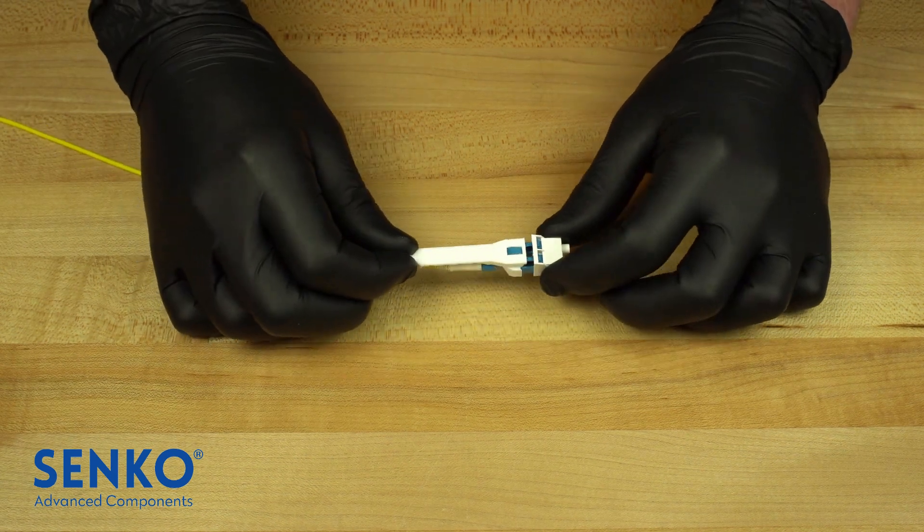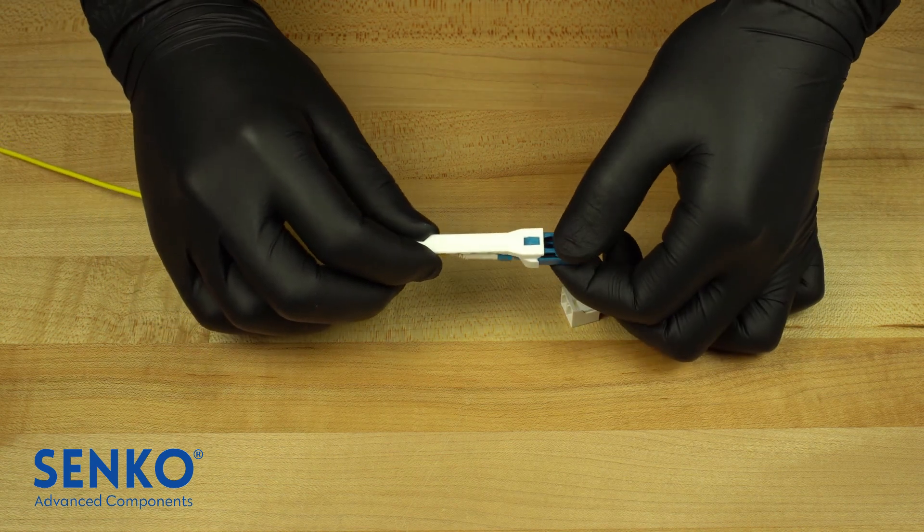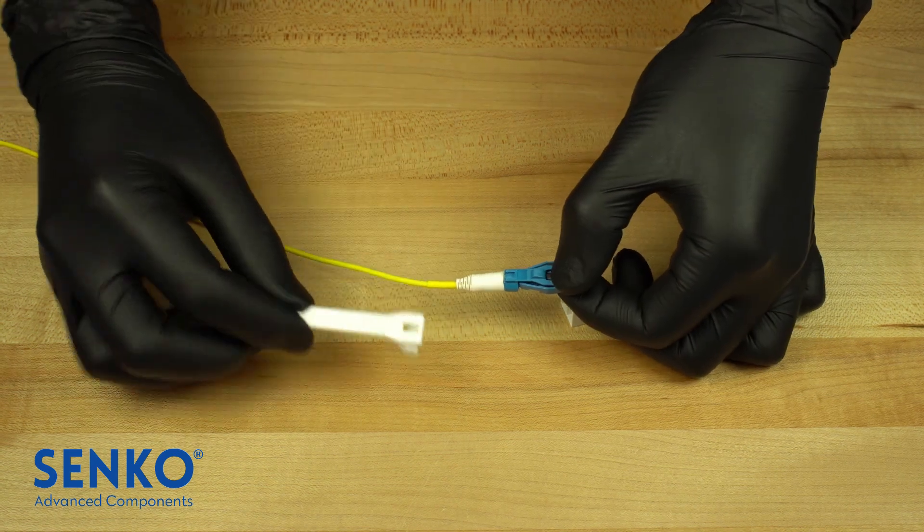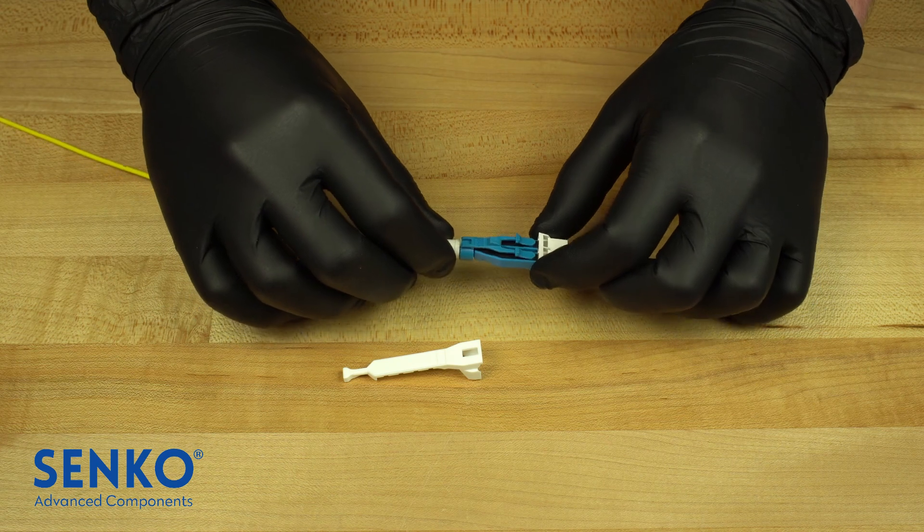To remove the push-pull tab from the connector, you simply push down on the connector latch from the front and pull the tab off the back of the connector as shown.